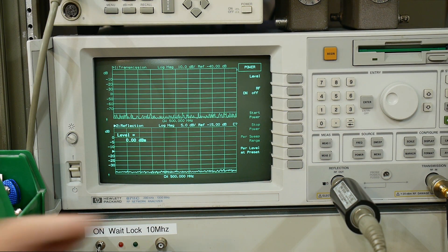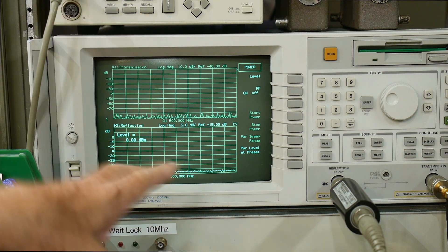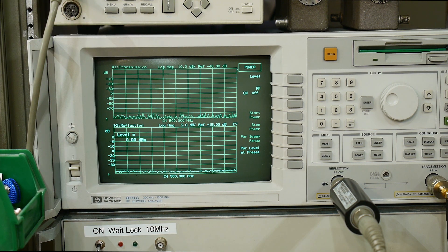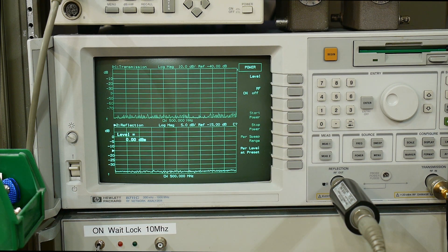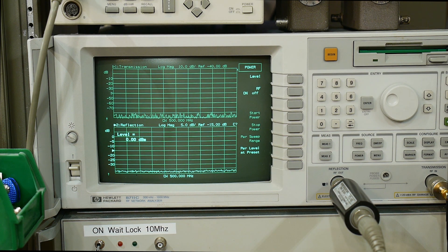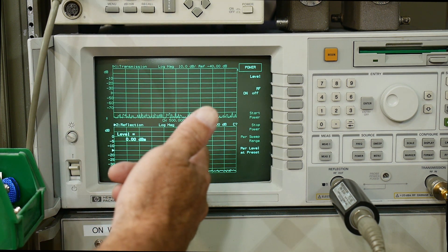All right, one of the tests I wanted to do was how accurate the output of this thing is. It does have a stepped attenuator, so this model is fancier than the standard model as it has a stepped attenuator to allow you to lower the power output of the generator. So I have it set to 0 dBm now.